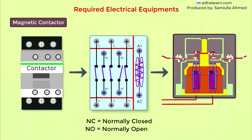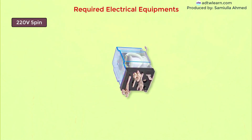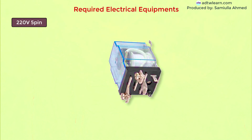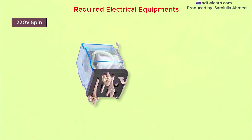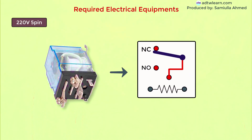When we turn on the supply for coil A1-A2, the coil magnetizes and attracts the plunger, and normally open contacts get closed and normally closed contacts get open. Next, we need a 220-volt 5-pin relay. This also works on the same principle. This is the actual picture of the relay and this is the theoretical working — this coil energizes and makes the normally closed contact open and the normally open contact close.